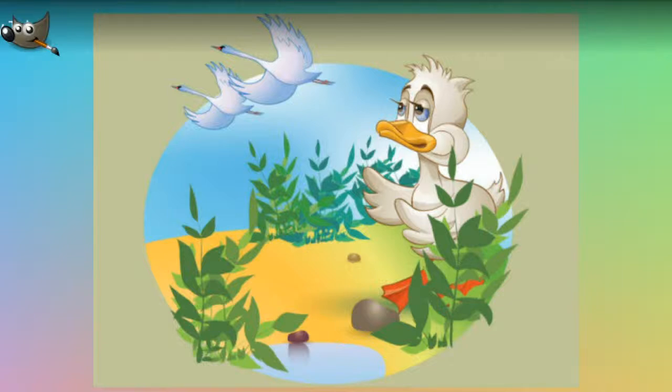Now came the autumn. The leaves in the forest turned yellow and brown, the wind caught them so that they danced about, and up in the air it was very cold. The clouds hung low, heavy with hail and snowflakes, and on the fence stood the raven crying "Crow, crow" for mere cold. Yes, it was enough to make one feel cold to think of this. The poor duckling certainly had not a good time.